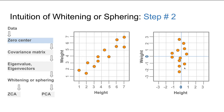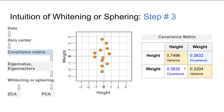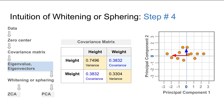Once that step is completed, we use the zero-centered dataset to calculate the covariance matrix, as shown on the right-hand side. This is a square matrix where the diagonal elements are the variances and the off-diagonal elements are the covariances between different features. For example, the covariance between height and weight is 0.38, whereas the variance of height is 0.74, and similarly for weight.